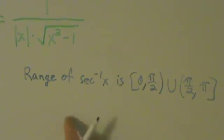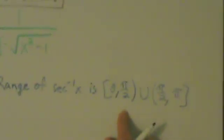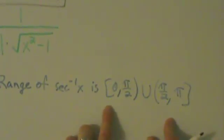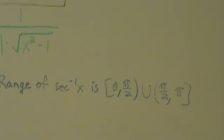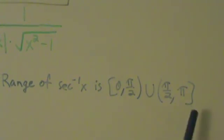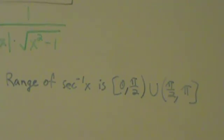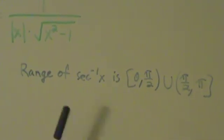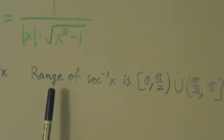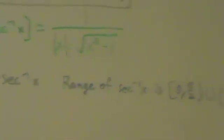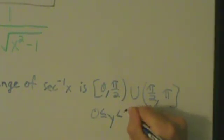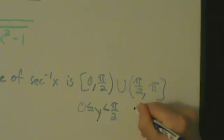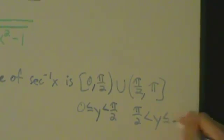This is just a refresher from trig. The closed brackets mean we include 0 and pi, and the open parentheses mean we don't include pi over 2. So it's everything from 0 to pi except for pi over 2. This means 0 is less than or equal to y is less than pi over 2, and pi over 2 is less than y is less than or equal to pi.